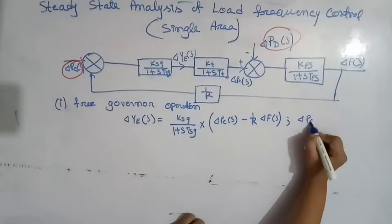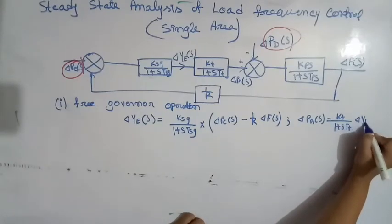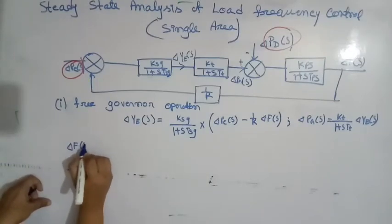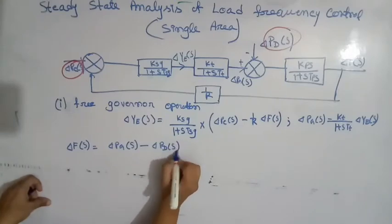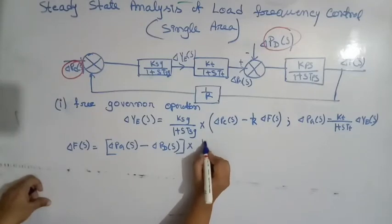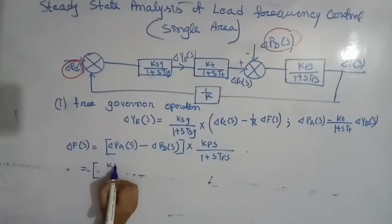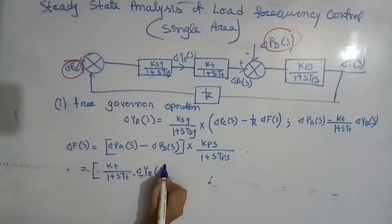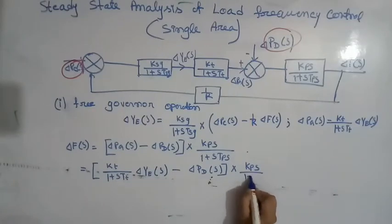Now, delta PG(S) can be written as KT divided by (1 + S·TT) into delta YES. This is the turbine model. Next, delta F(S) is equal to [delta PG(S) minus delta PD(S)] into KPS divided by (1 + S·TPS). So, we put the value of delta PG(S): delta PG(S) equals KT divided by (1 + S·TT) into delta YES, minus delta PD(S), into KPS by (1 + S·TT).